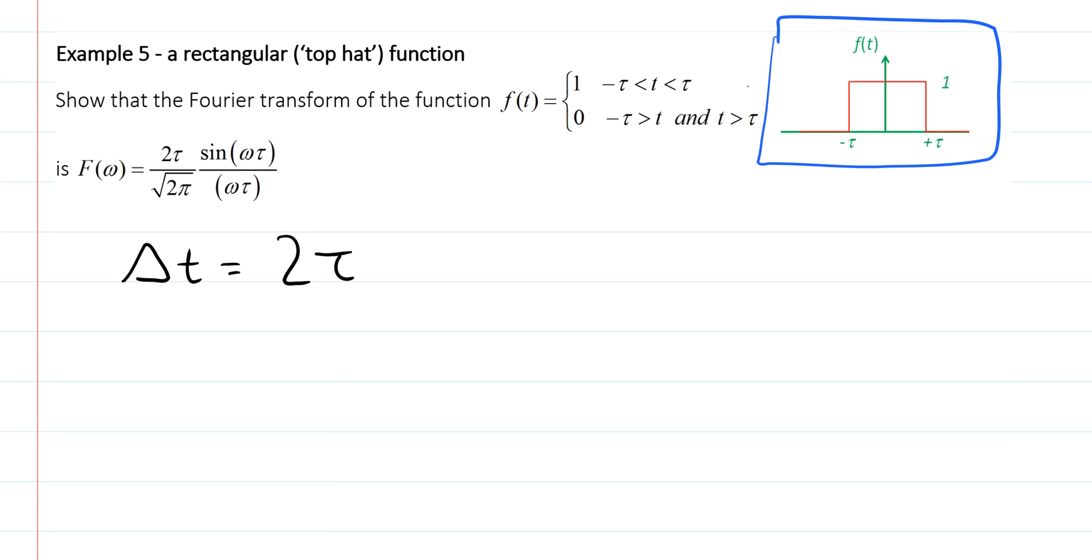We now need to work out the width of the Fourier transform. The Fourier transform is given by this equation here. This is a sinc function and we're going to define the width as being between the first two zeros of this function.